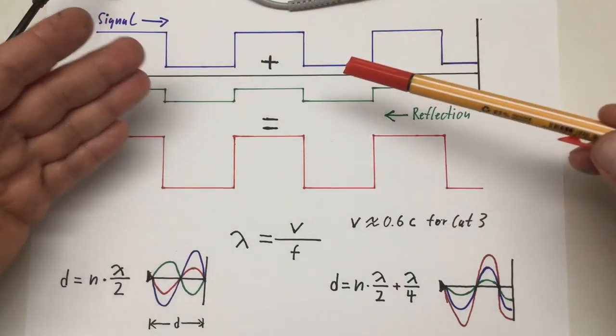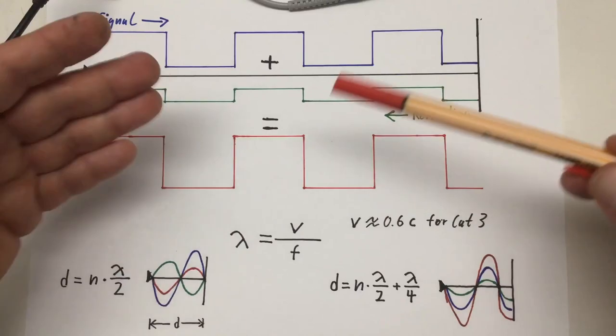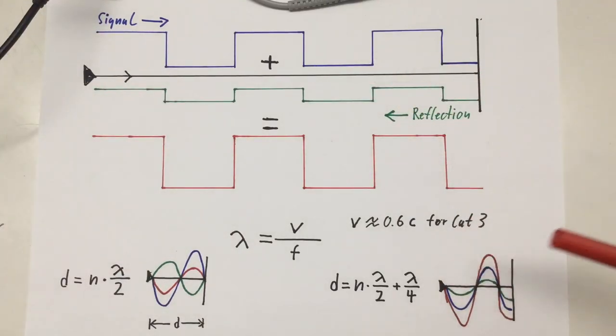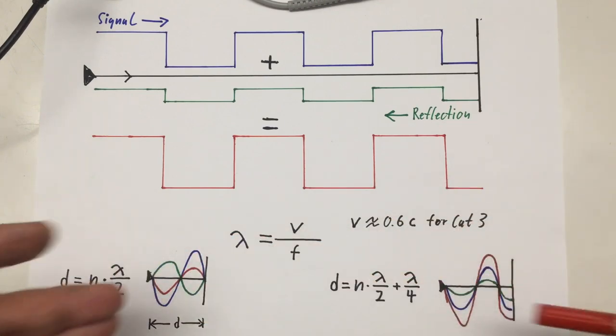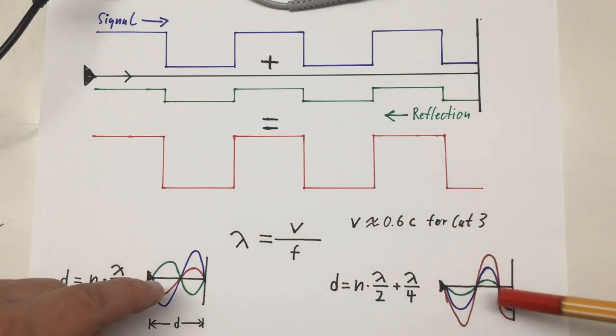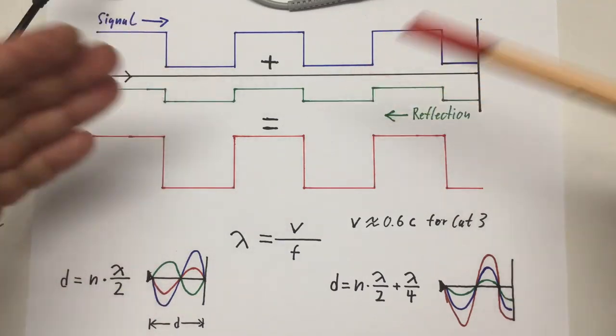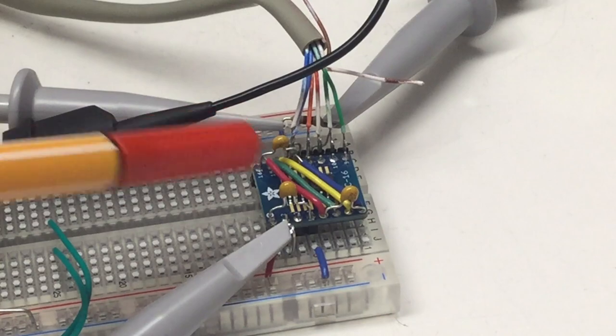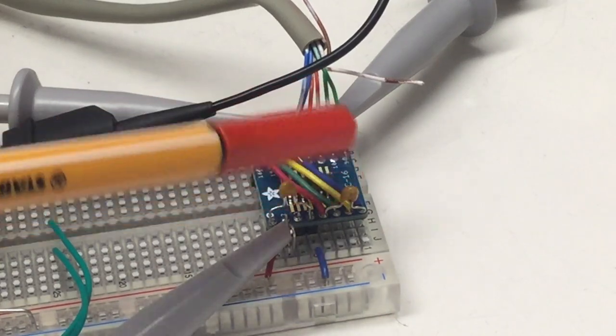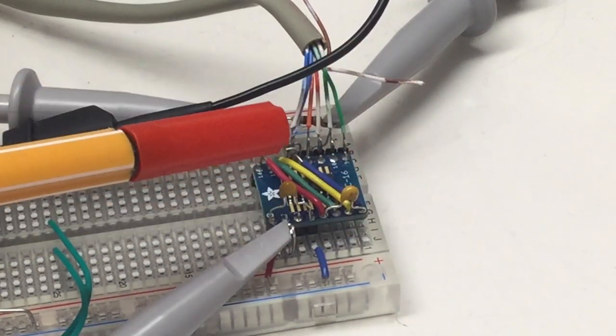Little disclaimer at that point: you have to take these drawings here with a little grain of salt because in nature electromagnetic waves are not really square waves. These square waves we see on the oscilloscope are made up by a combination of several sine waves of different frequencies.